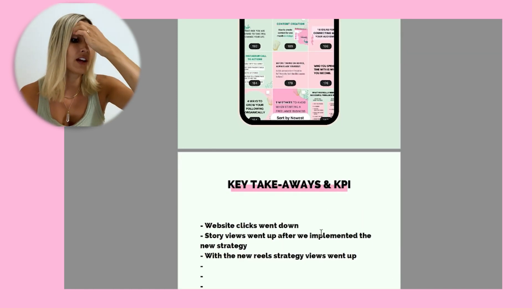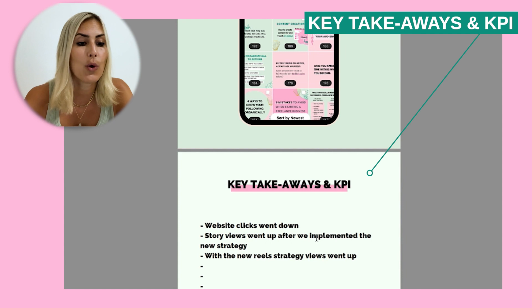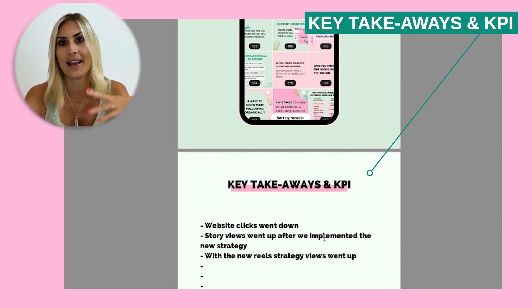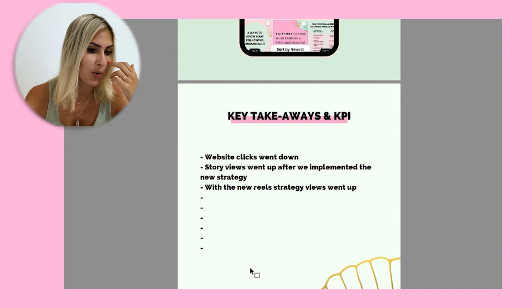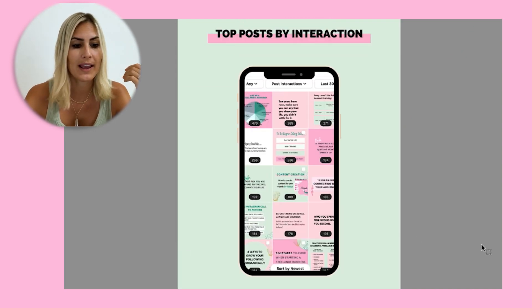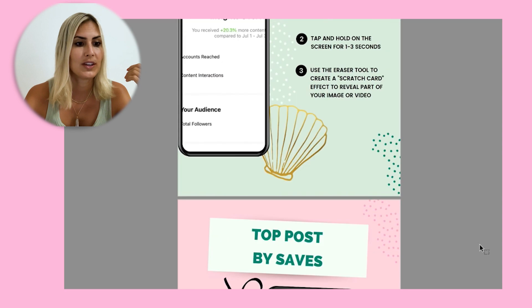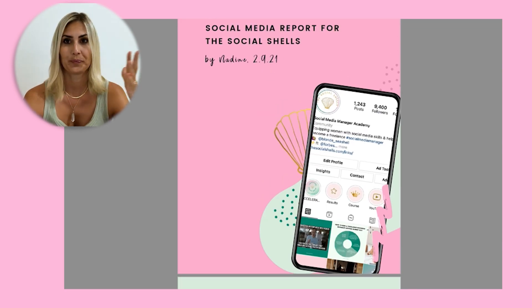Then we have key takeaways and KPIs — what is the overall thing that happened in August? You would fill that in for whatever month you're in, and it's just a bit more in-depth compared to the three takeaways on the first page.